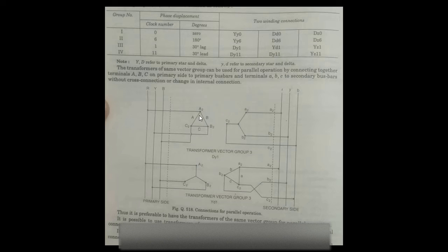For the second transformer of the star-delta vector group: star is the primary and delta is the secondary. The third is the prepared transformer of the same vector group for parallel operations. There are low transmission, medium transmission, and high transmission uses of transformers. The distribution transformer is the step-down transformer — delta-star — and this delta-star 1 is a very important part.